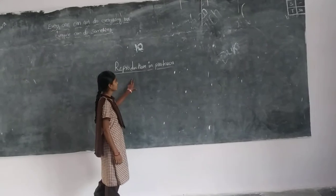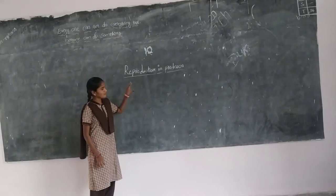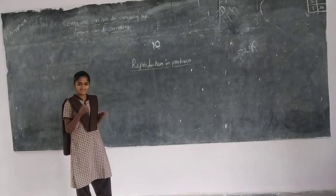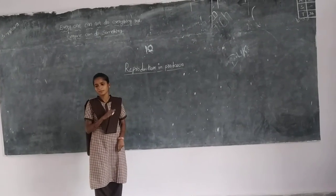Reproduction in your parents. No, it is not correct. Reproduction means it is a process from a parent offspring will develop. Then that offspring is similar to parent.